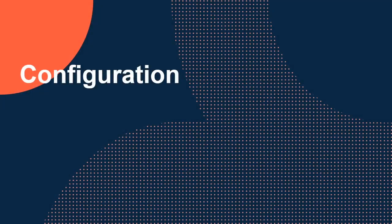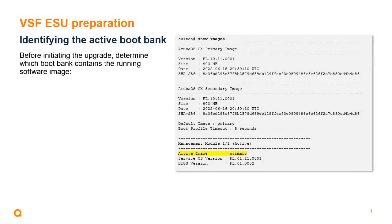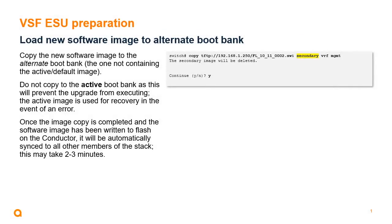To put VSF ESU into action, the first step is to identify the active boot bank using the show images command and look for the active image line in the output. Next, copy the new software image to the alternate boot bank — if the active boot bank is the primary, copy to the secondary, or vice versa. Do not copy the new image to the active boot bank, as this is used for recovery in the event of an error as well as by the rollback timer.